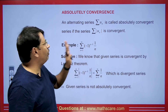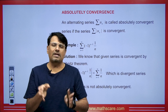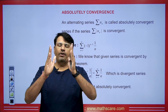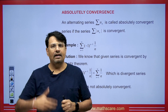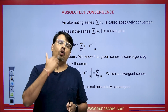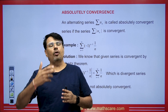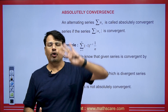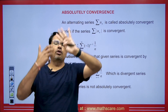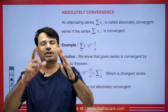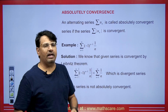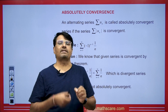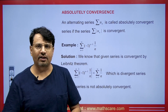Today in this lecture, we will discuss absolutely convergent. If we have any alternating series and it is convergent, and if we take the series of its positive terms which also comes as convergent, then the series is absolutely convergent. If the series of positive terms does not converge but the alternating series is convergent, then we call it conditionally convergent. Today we will be discussing absolute convergence and how to determine whether a series is absolutely convergent or not.